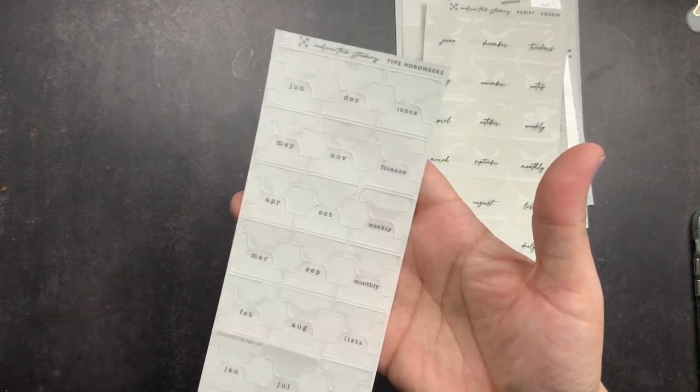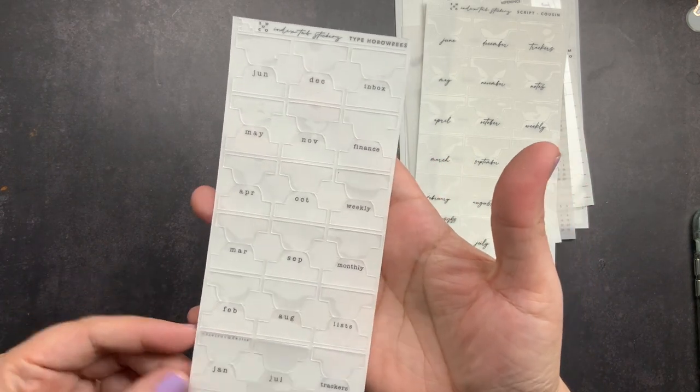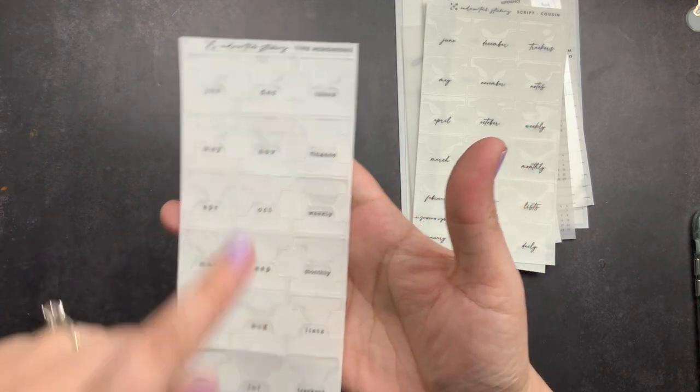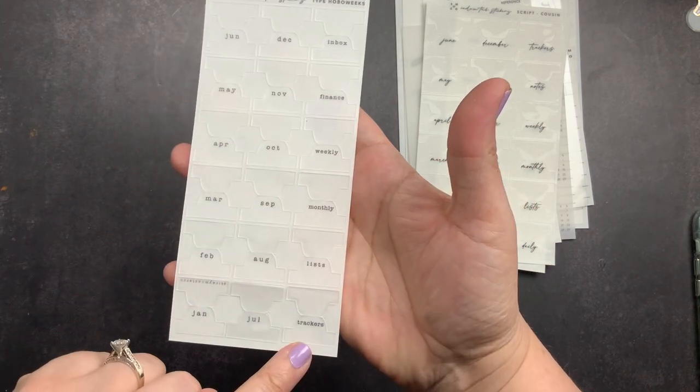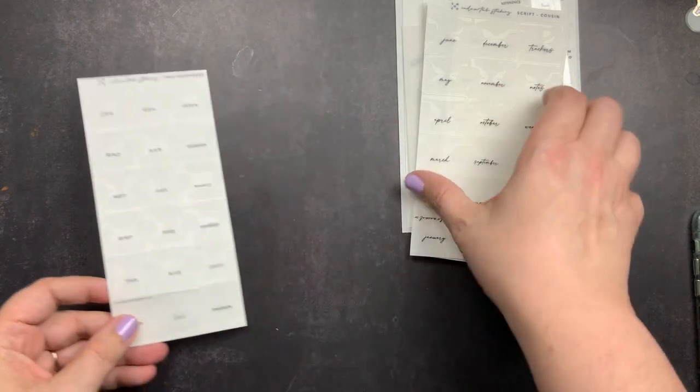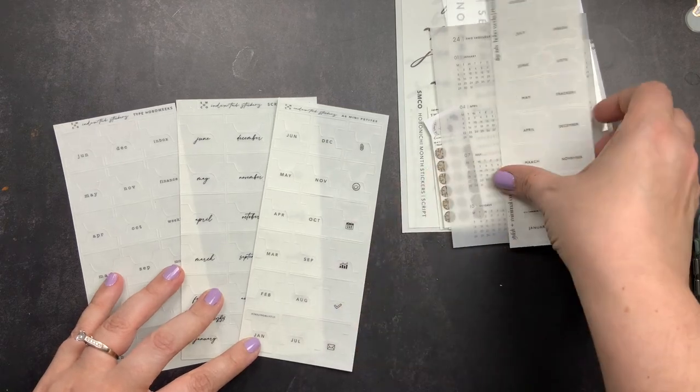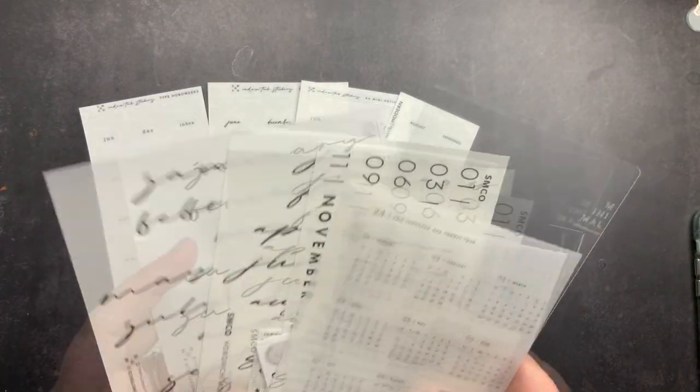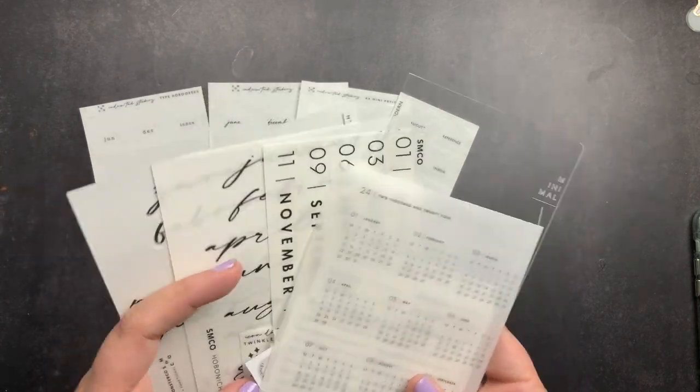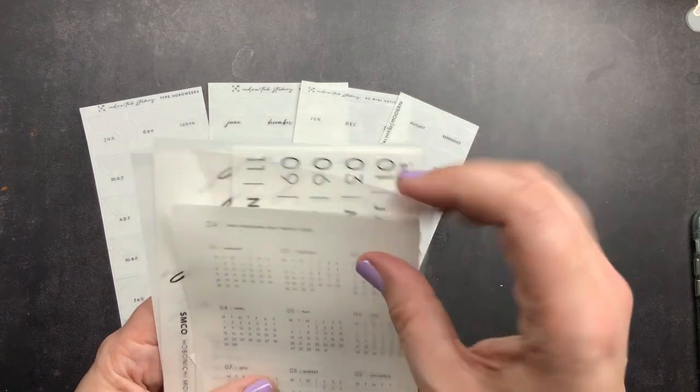And then the last one that I got is also Hobonichi week size. This is the type, like a typewriter font. And so once again, it has the months, inbox, finance, weekly, monthly, lists and trackers. So those are the four sets of tabs I got. That is the reason that I ordered was for the tabs. But when you're paying shipping, sometimes you want to add other things, especially during planner setup time. And I needed some stickers for planner setups. And then I have an undated planner, so I needed some stickers for that. And then I just thought these were fun to add and check out and try.